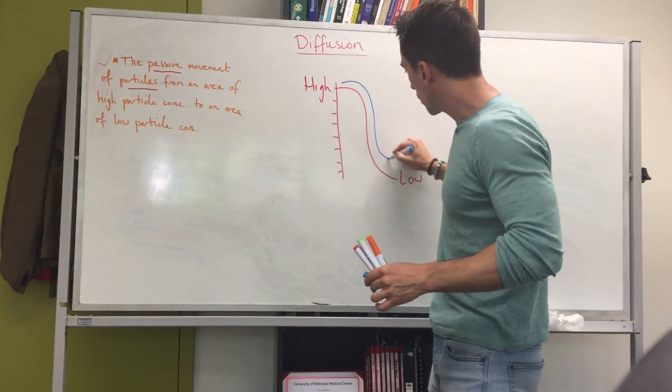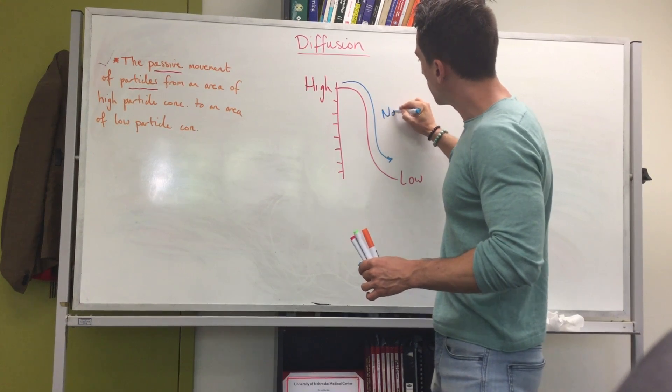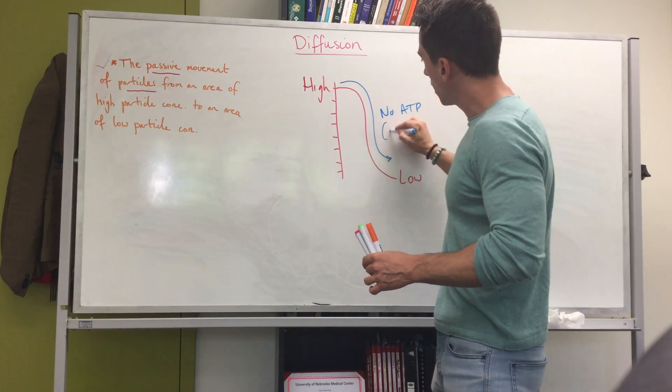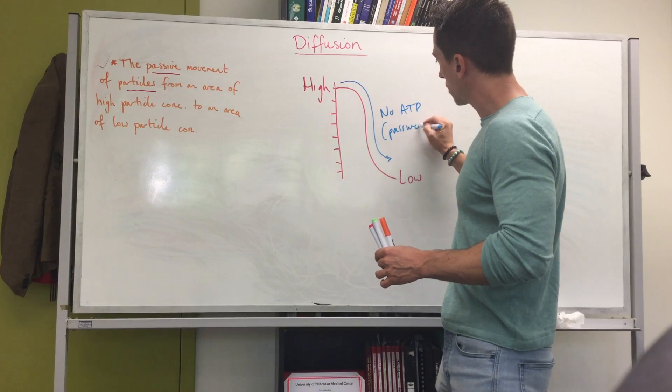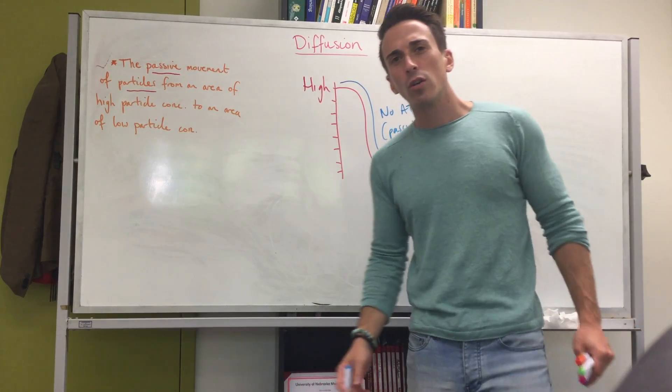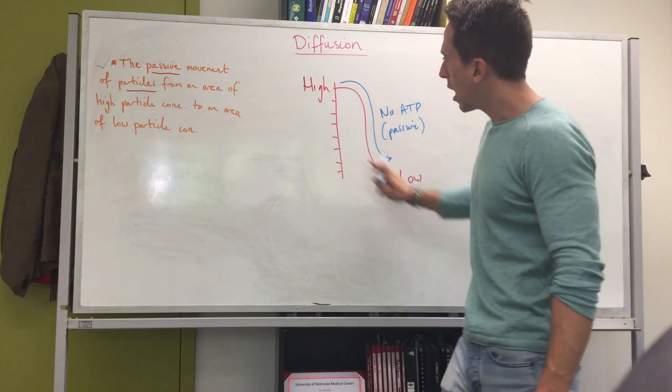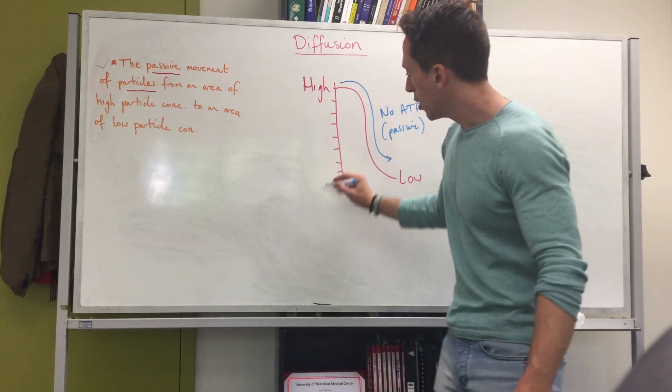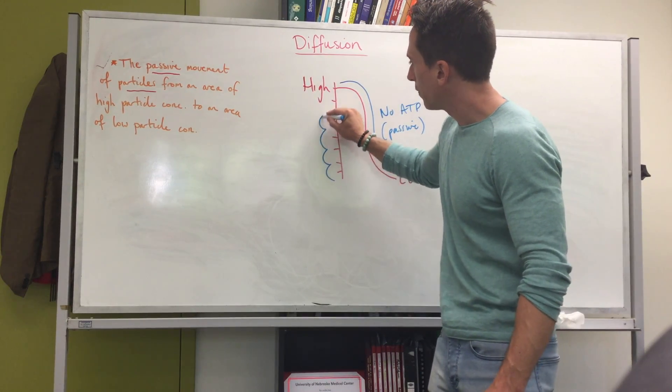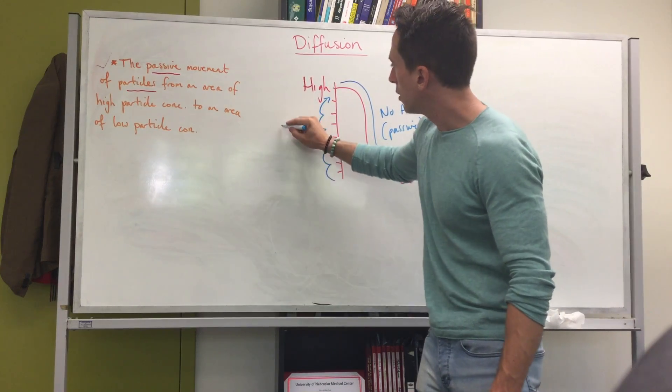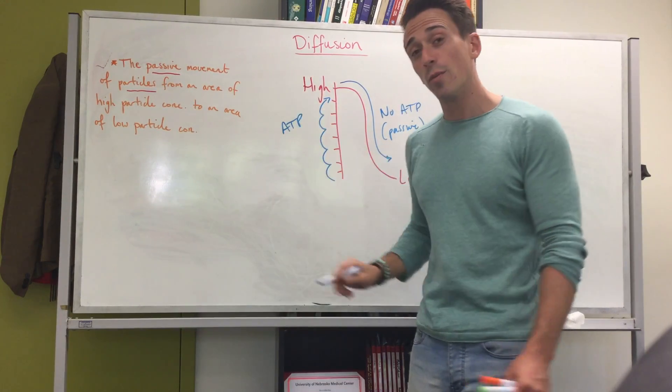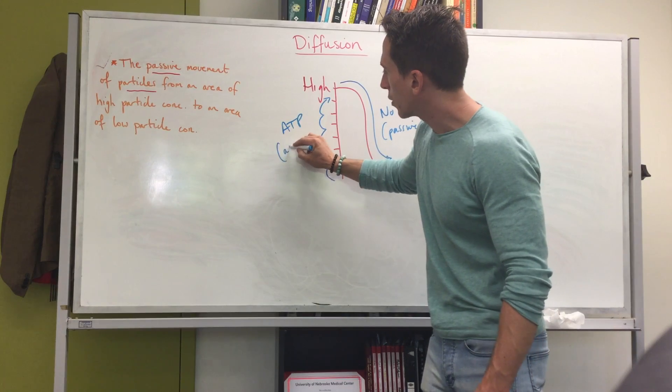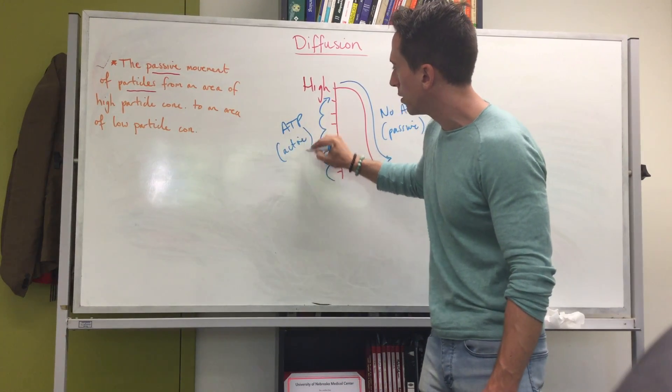But what if you want to go from a low concentration area up to a high concentration area? You need to climb that ladder, and climbing that ladder costs energy in the form of ATP. And that is what we call active transport.